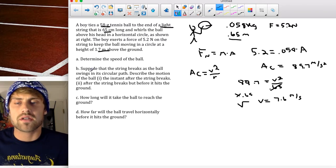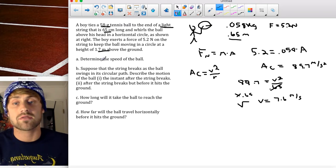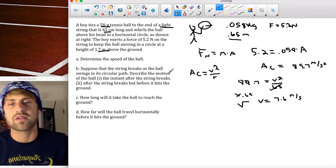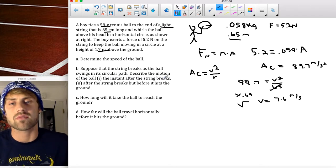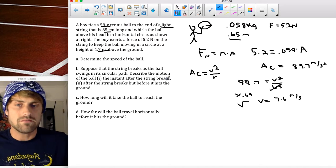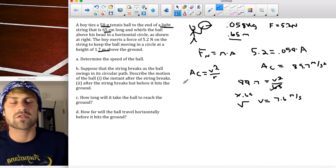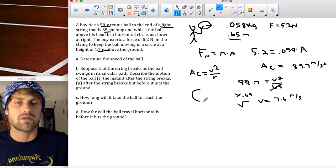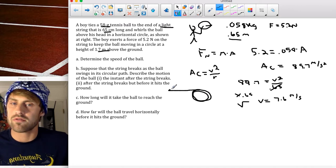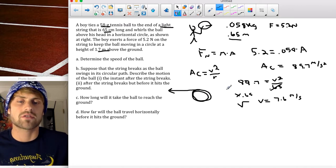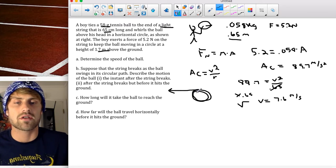Part B is asking two kind of conceptual questions. So suppose that the string breaks as the ball swings in its circular path. Describe the motion of the ball if, one, the instant after the string breaks, and two, after the string breaks, but before it hits the ground. So the instant after the string breaks, you guys might know this one. If the ball is going in a circle and all of a sudden the string breaks, the ball will go in a straight line. So my answer would be inertia would take the ball in a straight line, because we no longer have the string pulling in and accelerating it in a circle.